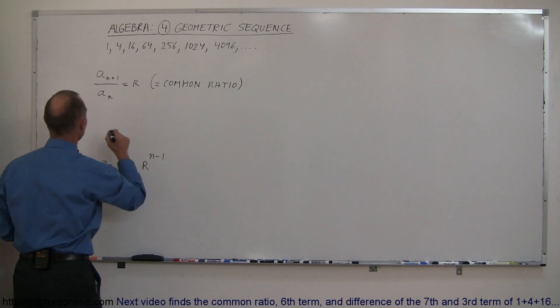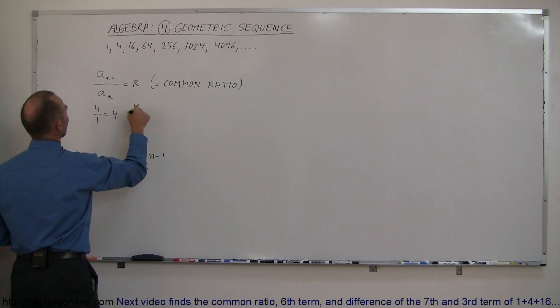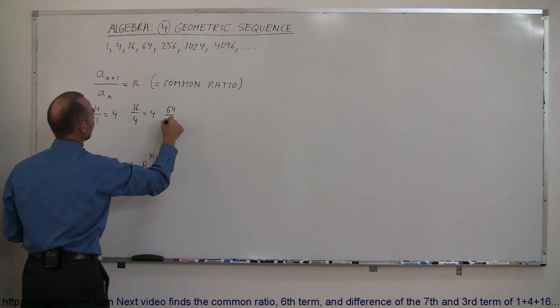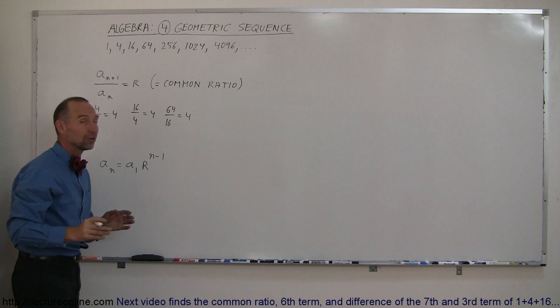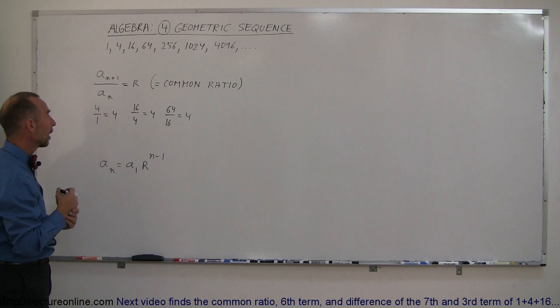For example, if I take 4 divided by 1, I get 4. If I take 16 divided by 4, I get 4. If I take 64 divided by 16, I get 4. So you can see that if you grab any number, divide it by the previous number, you end up with the same number, called the common ratio.